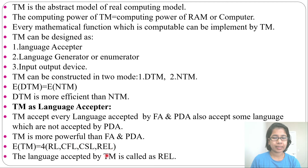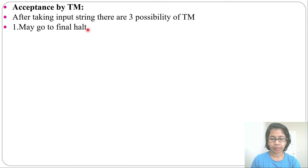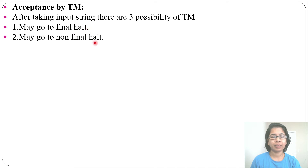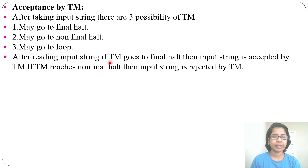The language accepted by a Turing machine is called recursively enumerable language. After taking an input string, there are three possibilities in a Turing machine. First, it may go to a final halt — it goes to the final state and stops there. Second, it may go to a non-final halt — it reaches a non-final state and stops, with no further move from that state. Third, it may go into a loop.